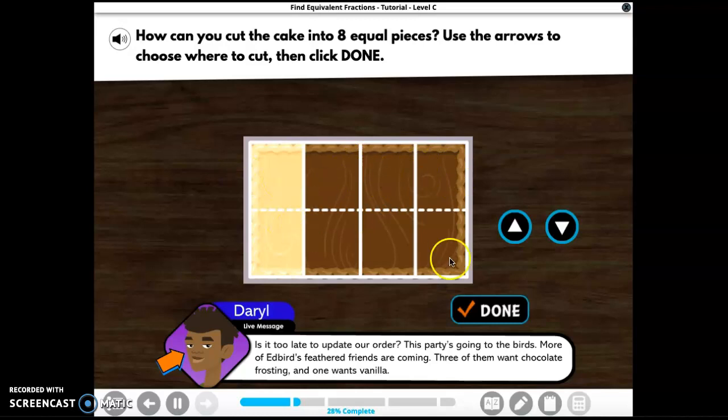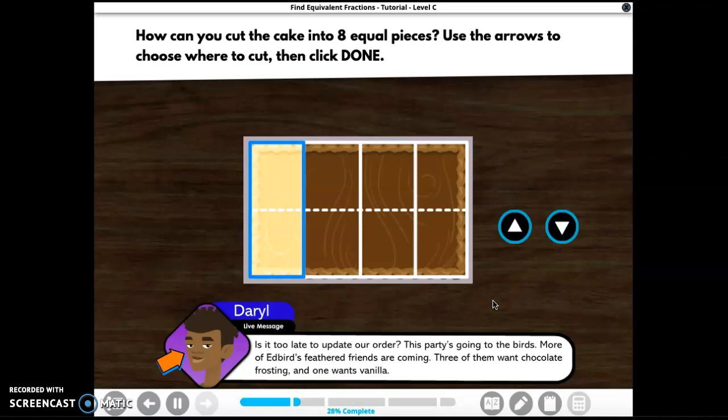By slicing the cake right through the middle, we double the number of pieces we have and they're all the same size. So we go from having four equal pieces to eight equal pieces. Now we can find another name for one fourth.